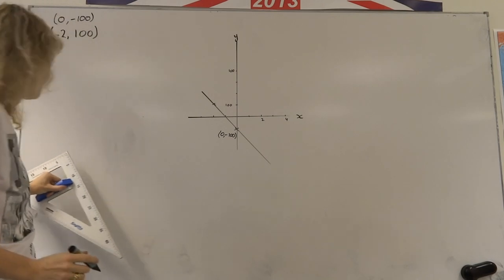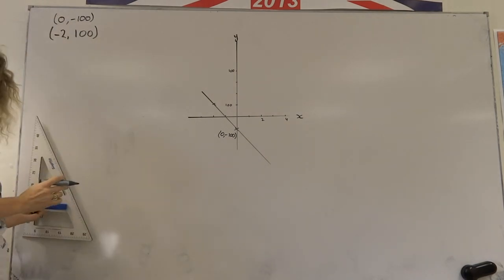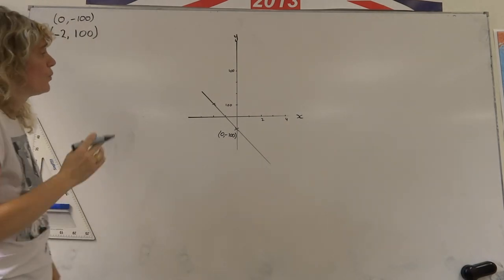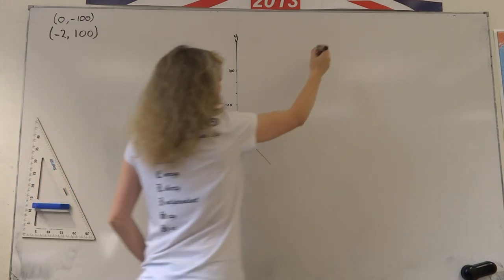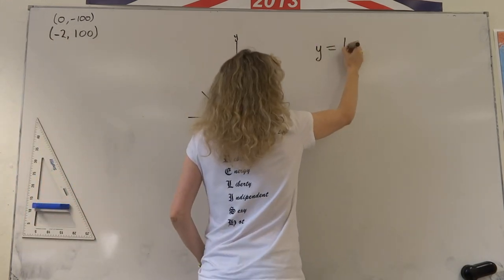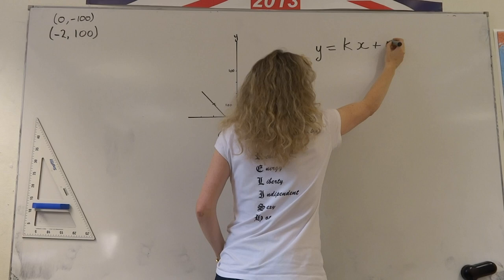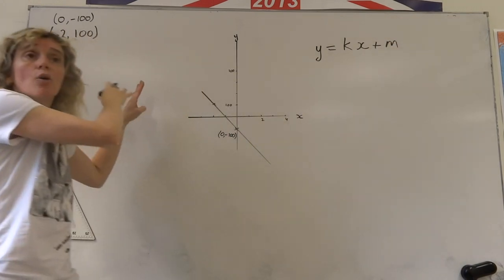So we have our second point. Now we can draw the equation of the straight line. And if we're going to do it the really simple way, we just look at it. We know that the formula is going to have the form y equals kx plus m.